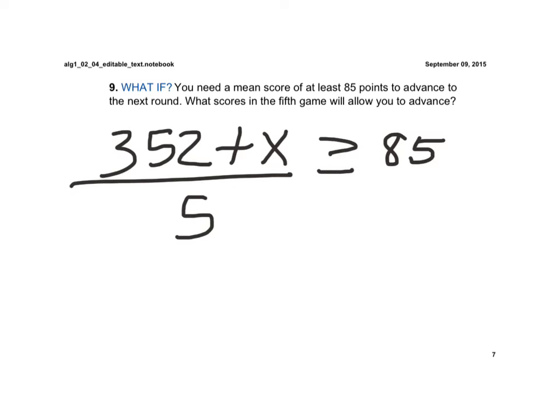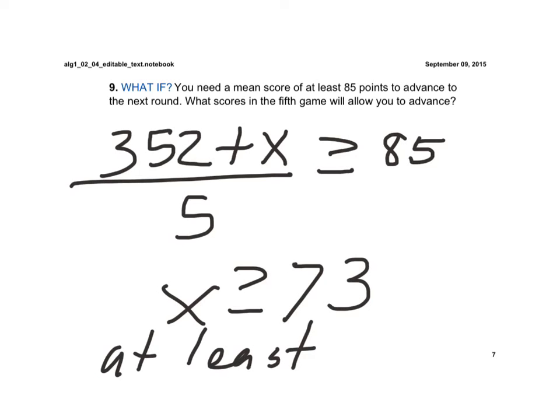And again, if you solve this, you'd find that x had to be greater than or equal to a 73. And so, you'd have to have a score of at least a 73 if the mean needed to be an 85.